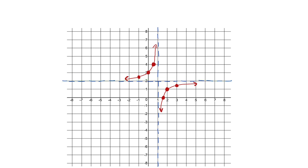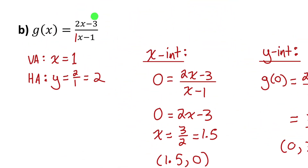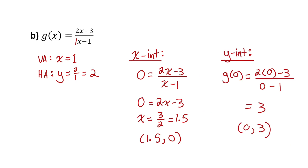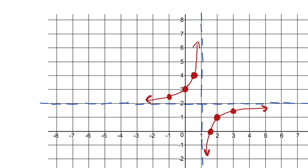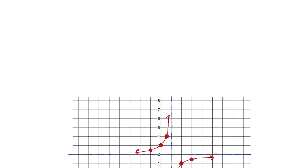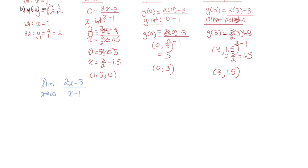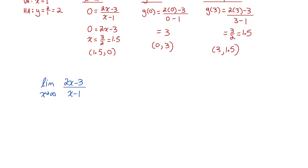Let's look at why the horizontal asymptote for g(x) = (2x - 3)/(x - 1) is at y equals two. A horizontal asymptote is the y value the function approaches as x goes to infinity or negative infinity. So to find it, I just need to find the limit of this function as x goes to plus or minus infinity. If it's approaching a value, there must be a horizontal asymptote at that value.